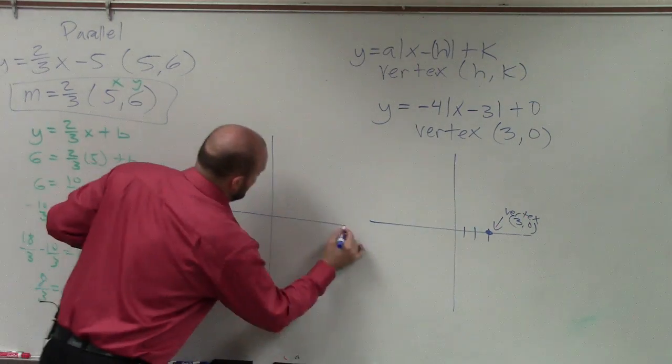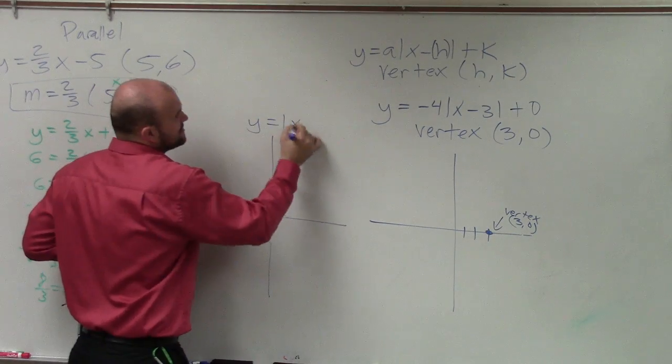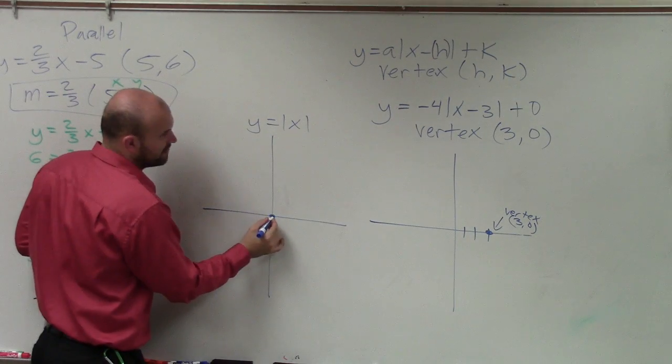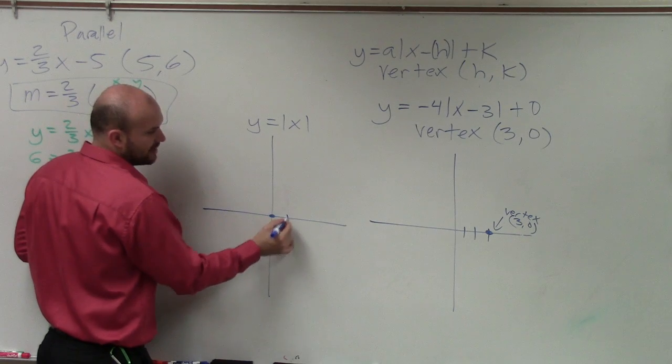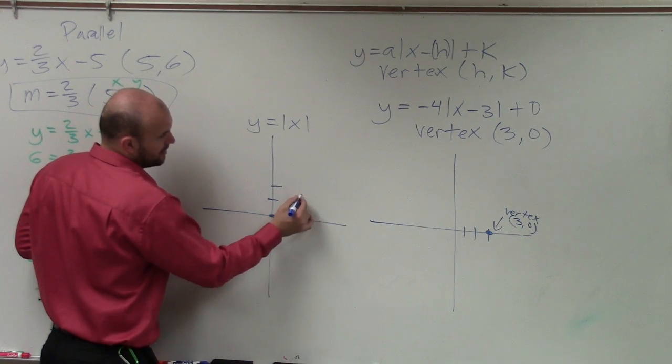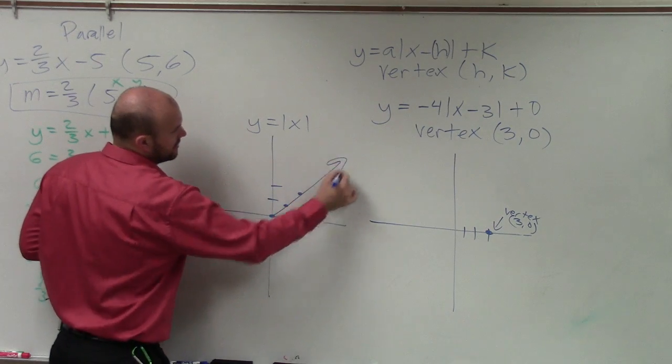Now, when we look at the absolute value of our parent graph, remember, the vertex is at 0, 0. It goes over 1, up 1. Over 2, up 2. It follows that pattern going up.